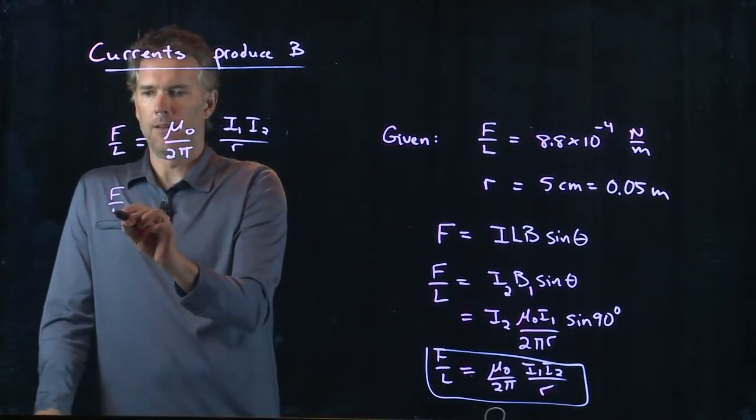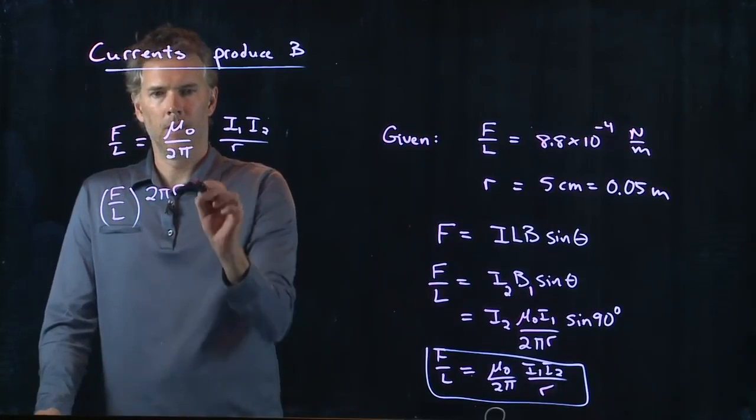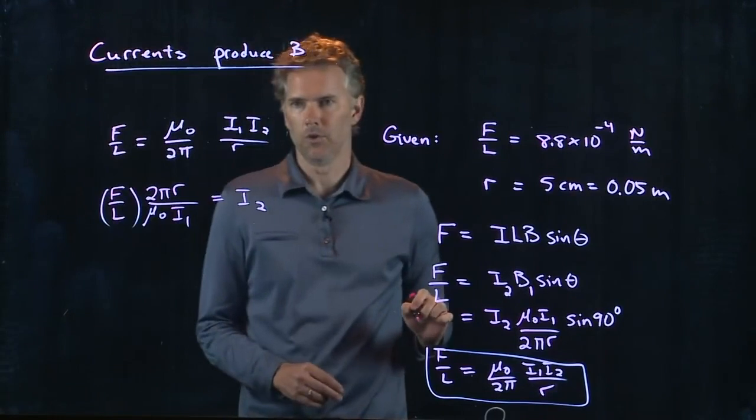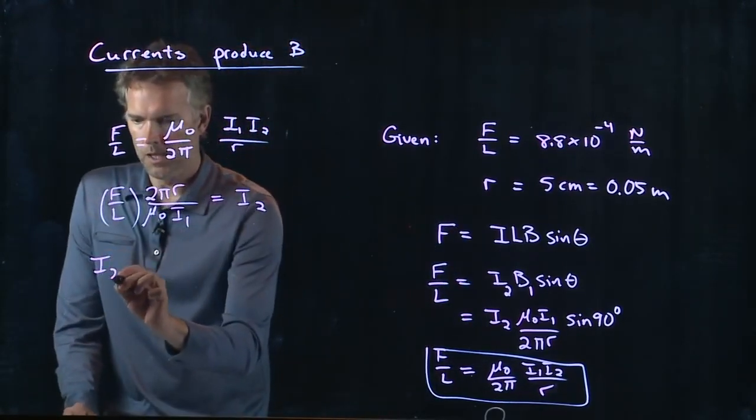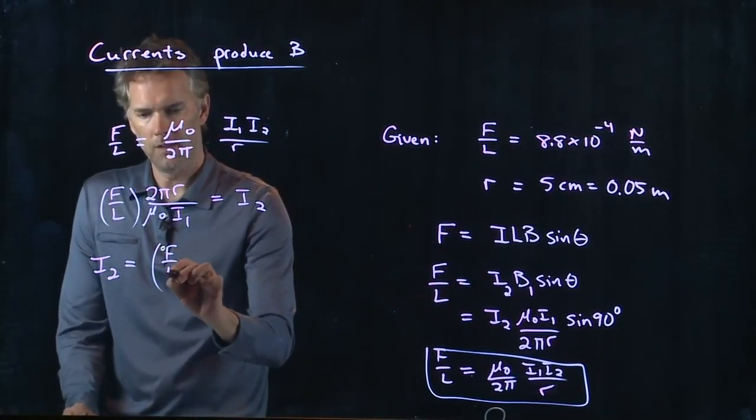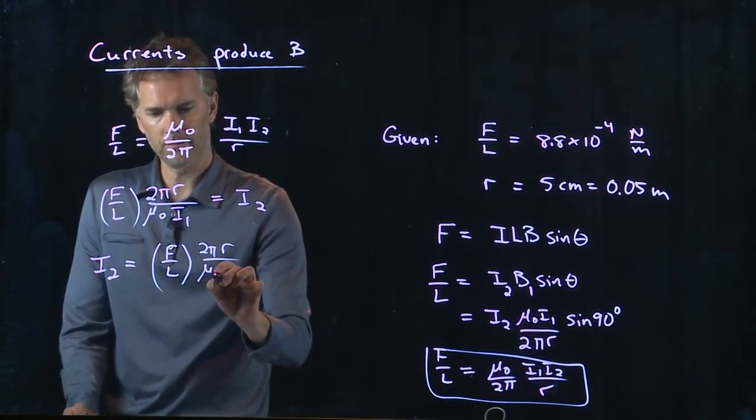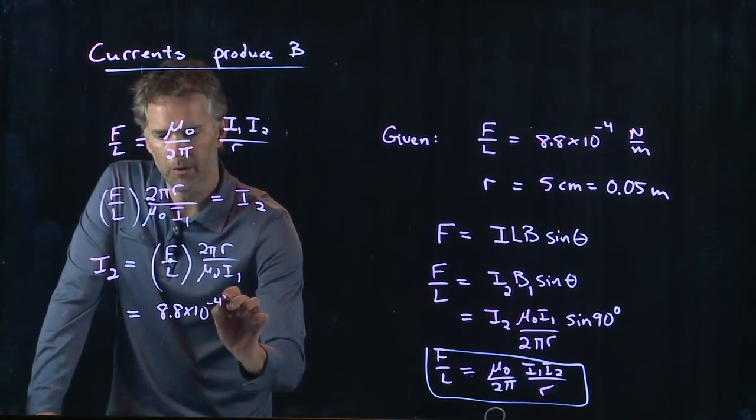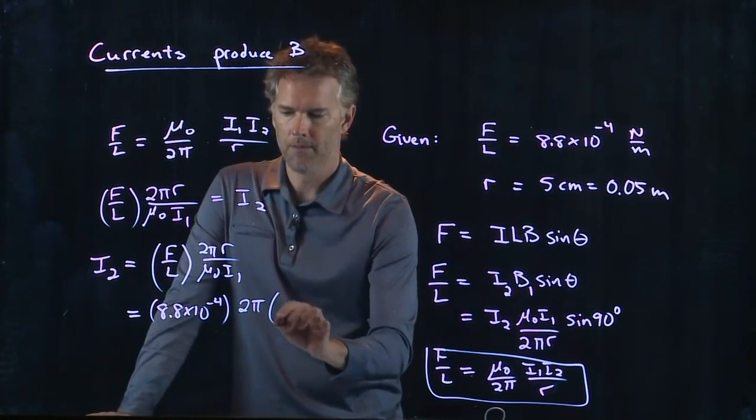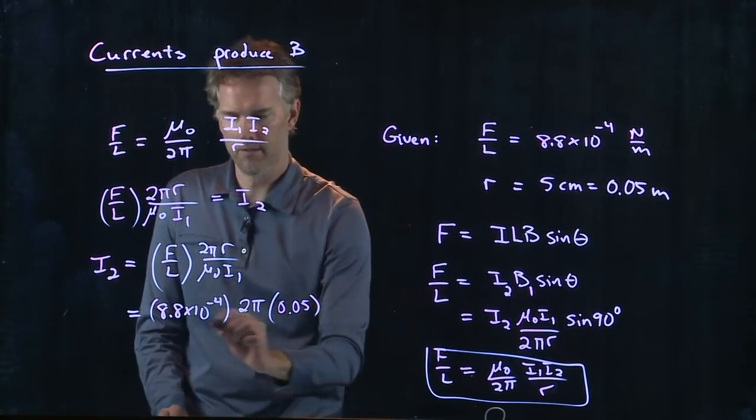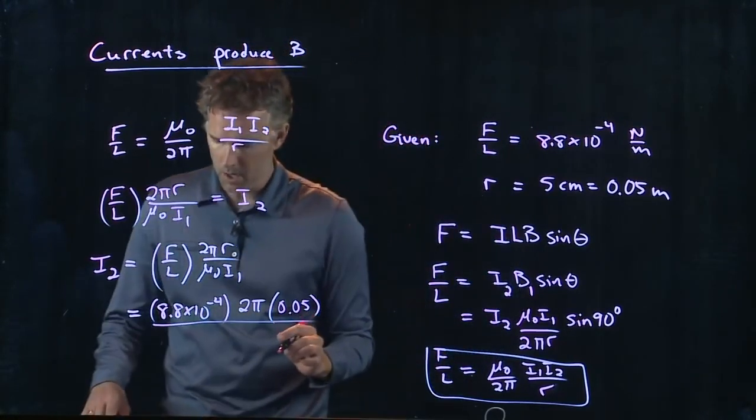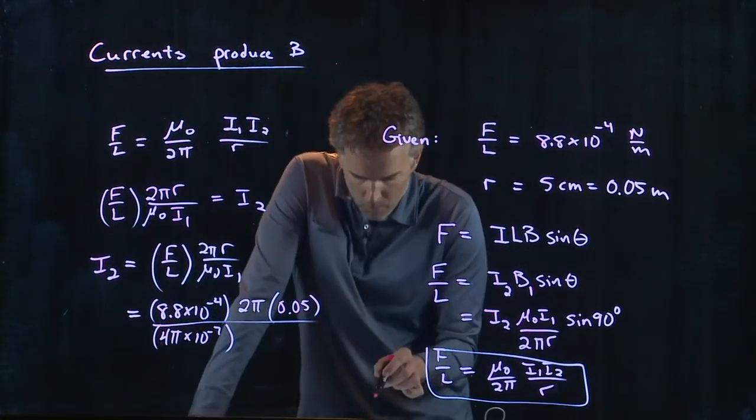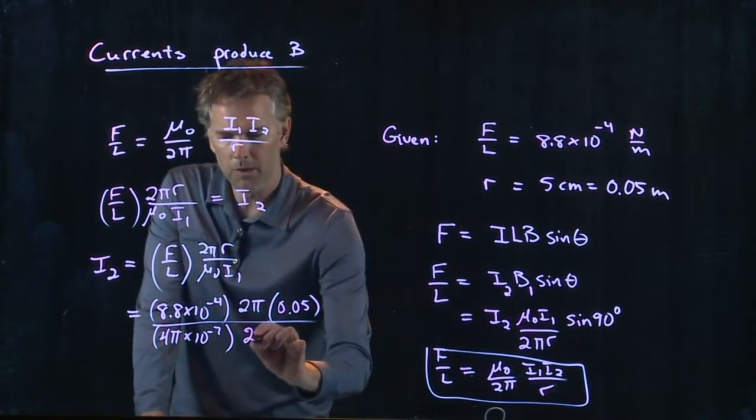So we had F over L equals mu naught over 2 pi, I1 I2 all over r. And we want to solve this for I2. So let's see, I got to multiply by 2 pi r, I have to divide by mu naught and I have to divide by I1, and that should be my I2. And so now we can calculate I2. I2 is F over L which we're given, R we're given, I1 we're given. F over L is 8.8 times 10 to the minus 4, we have a 2 pi, we have R which is 0.05, and then we have mu naught which we know is 4 pi times 10 to the minus 7 in SI units, and then I1 for our problem is 22 amps.